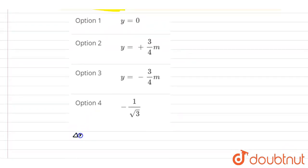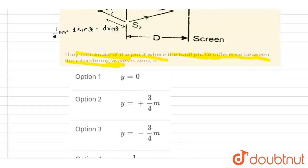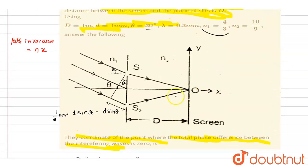So I will write down the initial path difference delta x1. It is equals to N1 times half. So it is 4 by 3 times half, so it is 2 by 3 mm. So this is the path difference in vacuum.